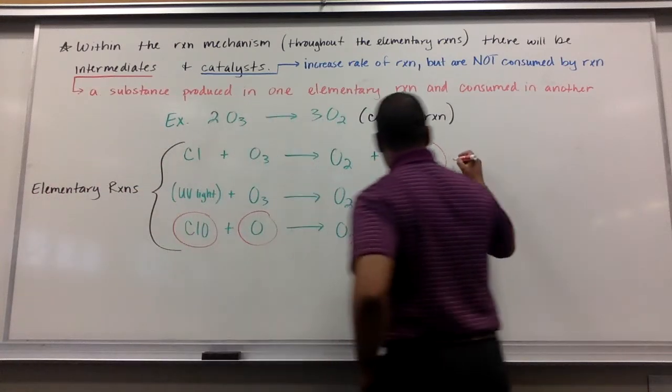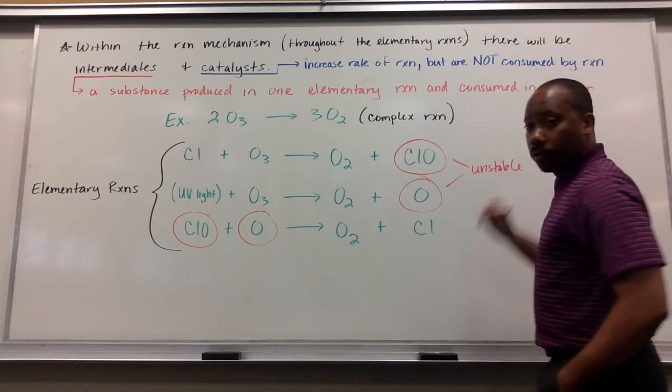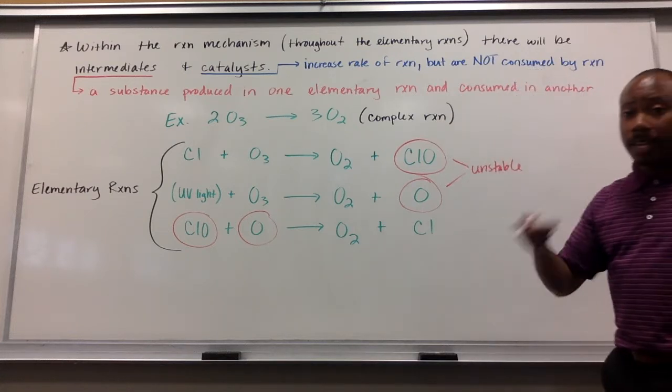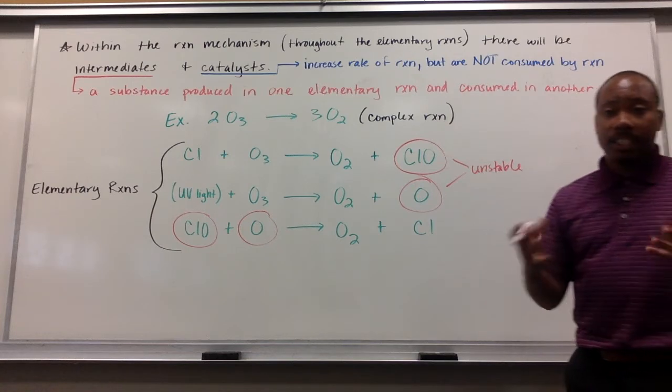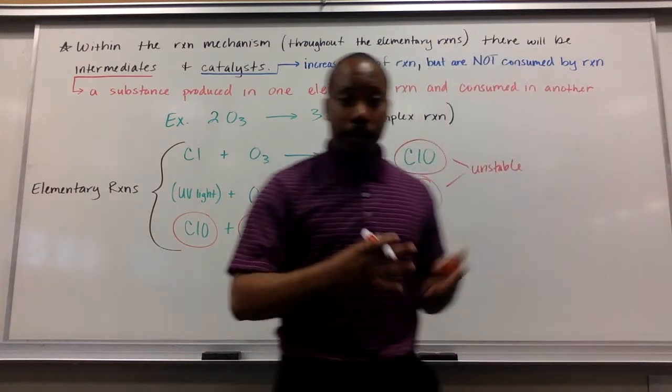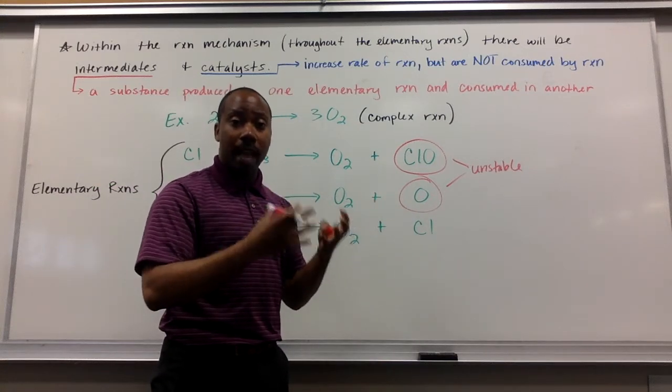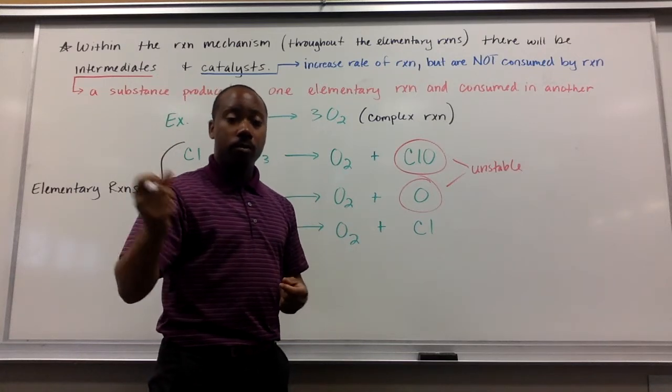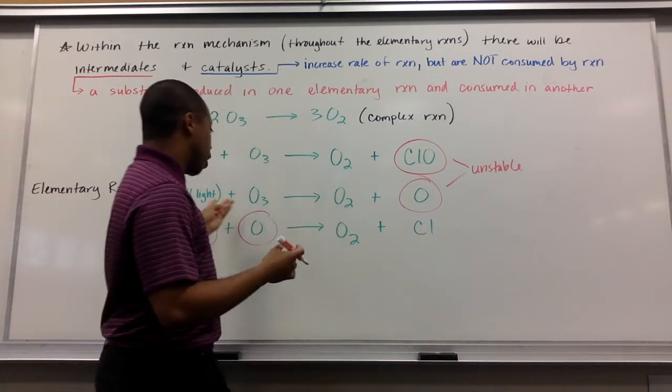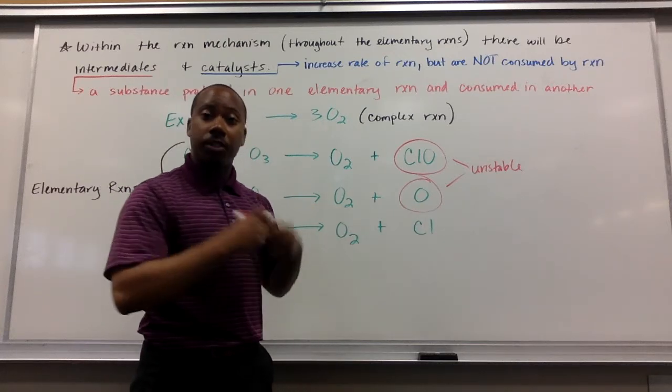Usually, your intermediates are very unstable. So they're formed and pretty much immediately used up again because they can't exist without their particular octets achieved. As you know, O doesn't exist on its own just out there for any extended period of time. It's broken off from O3 or O2 to make a single O and then it's immediately used up again. It's an intermediate.